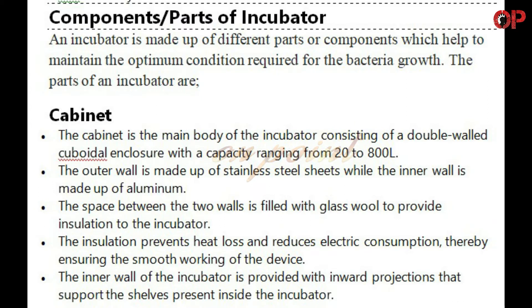Components: An incubator is made up of different parts or components which help to maintain the optimum condition required for the bacteria's growth. Cabinet: The cabinet is the main body of the incubator, consisting of a double-walled cuboidal enclosure with a capacity ranging from 20 to 800 liters. The outer wall is made up of stainless steel sheets, while the inner wall is made up of aluminum. The space between the two walls is filled with glass wool to provide insulation to the incubator.